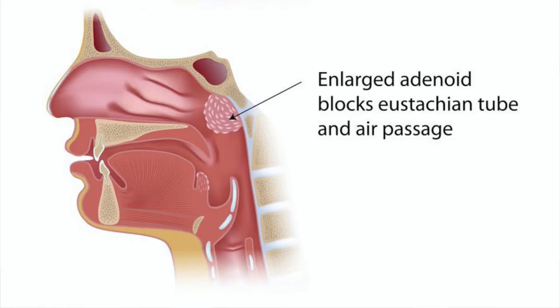The Adenoid is present at the back of the nose and it can obstruct something known as the Eustachian tube, which connects the ears to the nose. When this tube gets blocked because of Adenoids, the ears can get frequent infections or otitis, and sometimes there can be a sticky fluid inside the ears. This condition is called glue ear or serous otitis media, which can lead to hearing loss in a child.